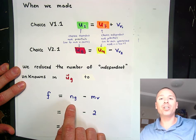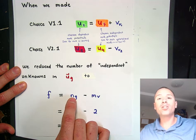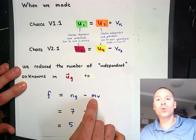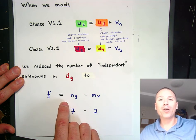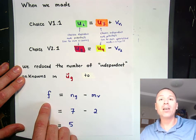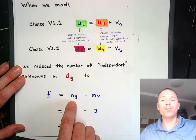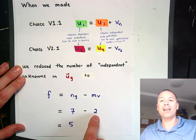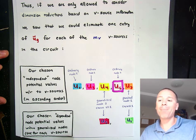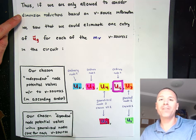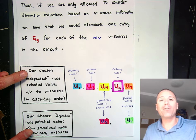Step 6 allowed us to reduce the dimensions of the number of unknown potentials from the total number of nodes to the total number of nodes minus the number of voltage sources. In other words, for each voltage source we decrease the number of independent node potential variables by 1. So when we're looking at independent node potentials only with respect to the voltage sources, we get a total of total nodes minus number of voltage sources, which in this case is 7 minus 2, equals 5. The point of step 6 was to figure out what happens when we focus on the dimension reduction that comes through voltage sources, and that partitioned the node potentials in the vector u sub g.